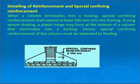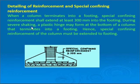While detailing the reinforcement in the footing, two parameters must be considered: confining reinforcement and the extension of the column bar into the footing. When a column terminates into a footing, special confining reinforcement shall extend at least 300 mm into the footing. During severe shaking, a plastic hinge may form at the bottom of a column terminating into a footing, hence special confining reinforcement must be extended into it.